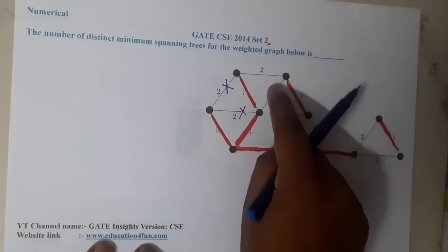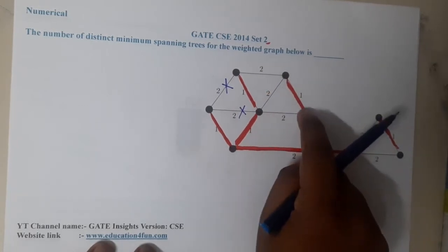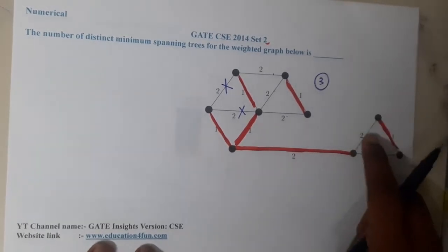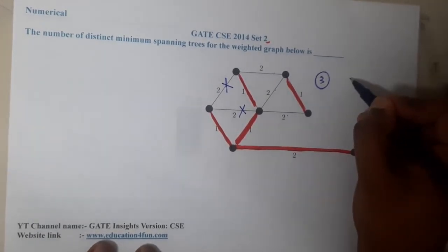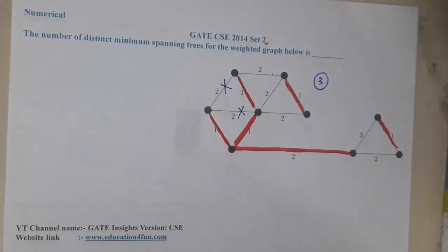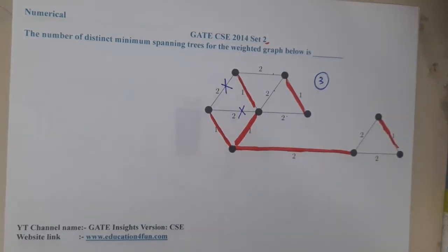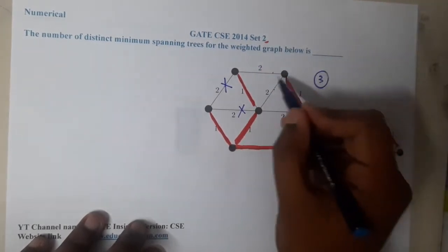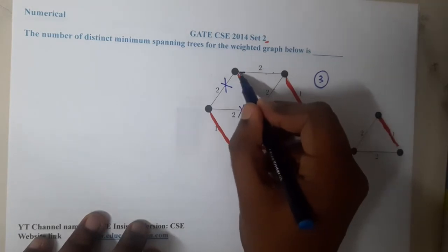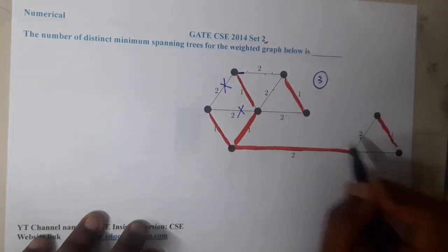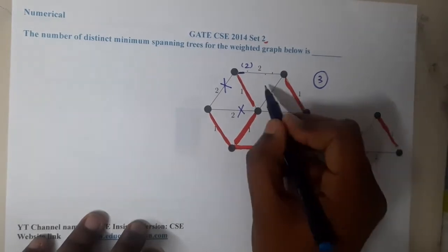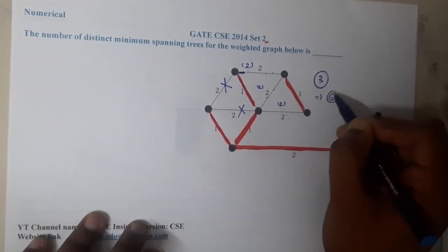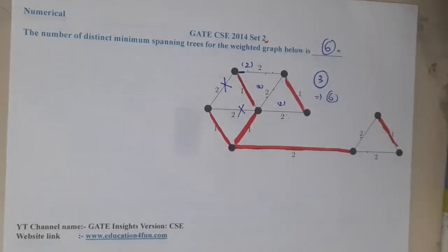Now we have various options. In one group I have three different choices, and in another group I have two choices. So in total, the number of distinct minimum spanning trees is three multiplied by two, which equals six. Among the three edges in one group I can take any one, and among the two edges in the other group I can take any one, giving six different combinations in total.